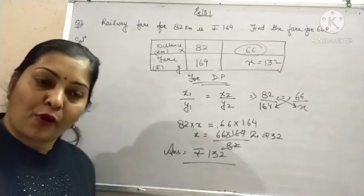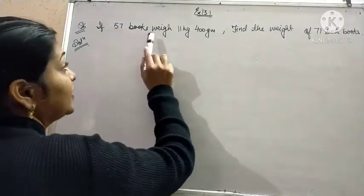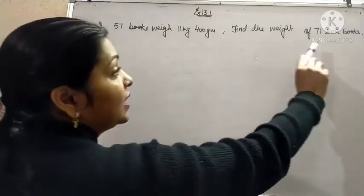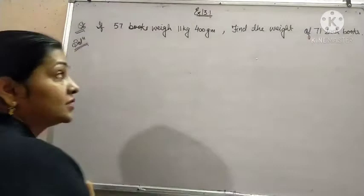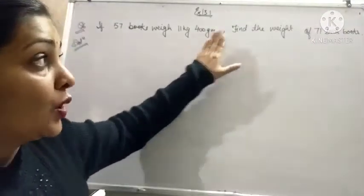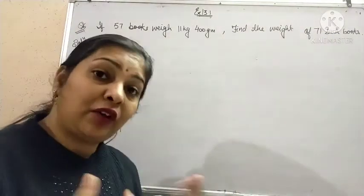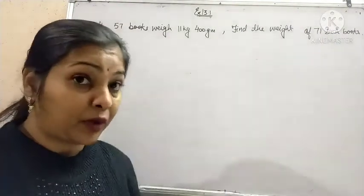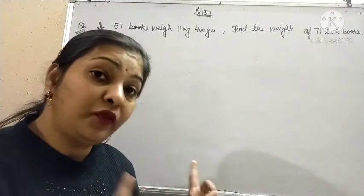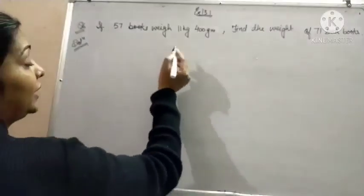This solves our problem. Question number 6. It is given that if 57 books weigh 11 kg 400 gram, find the weight of 71 such books. See weight of 57 books is given to you and you have to find weight of 71 books. So weight will increase because number of books are increased. That means that this problem is of direct proportion.